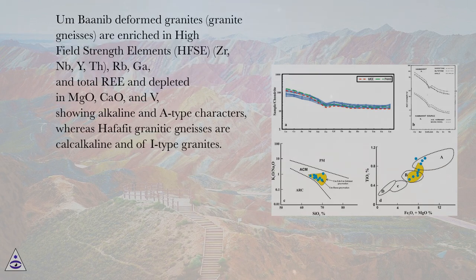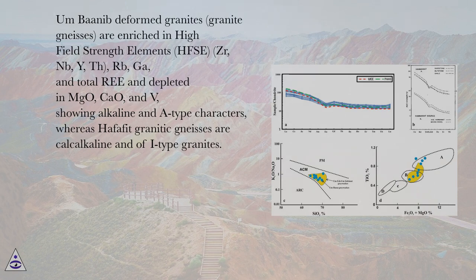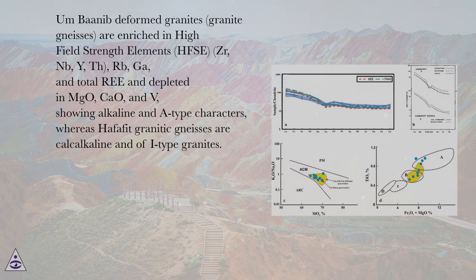Umbanib deformed granites and granite gneisses are enriched in high field strength elements (HFSE): Zr, Nb, Y, Th, Nb, Ga, and total REE, and depleted in Rb, Ca, and V, showing alkaline and A-type characters, whereas Hafafit granitic gneisses are calc-alkaline and of I-type granites.